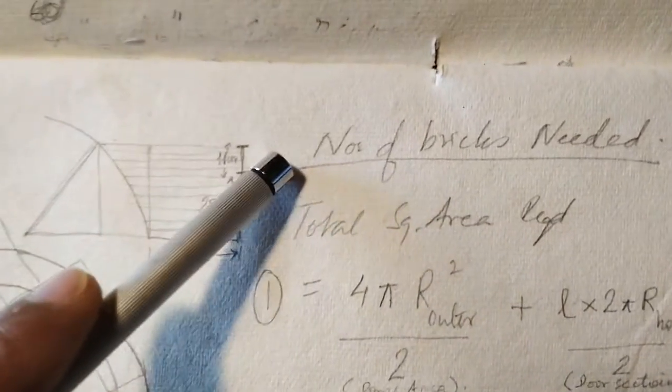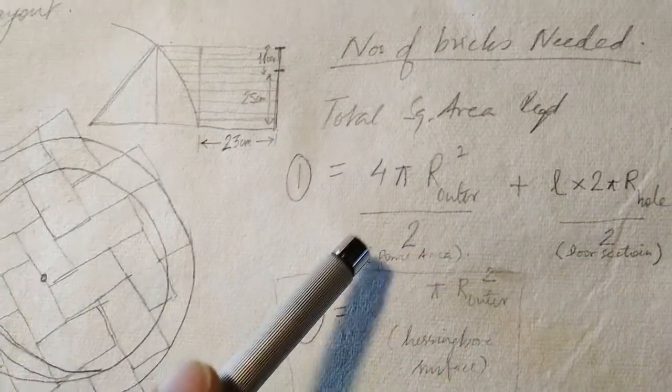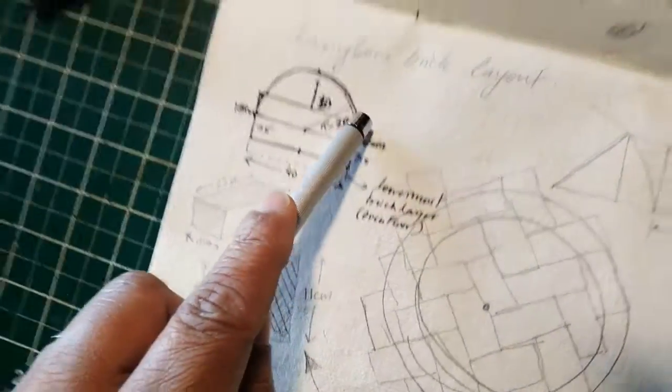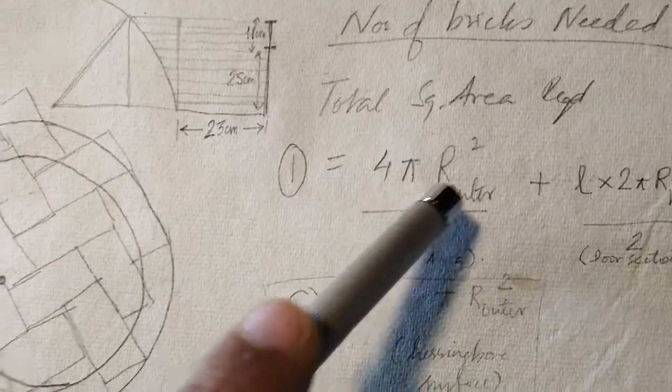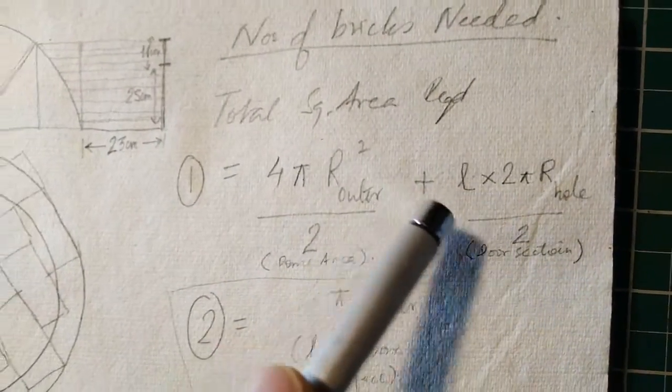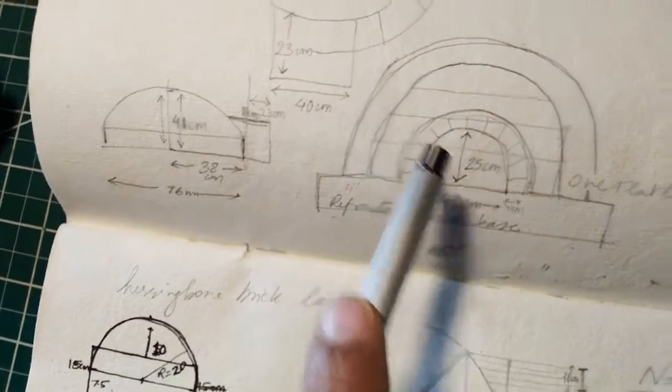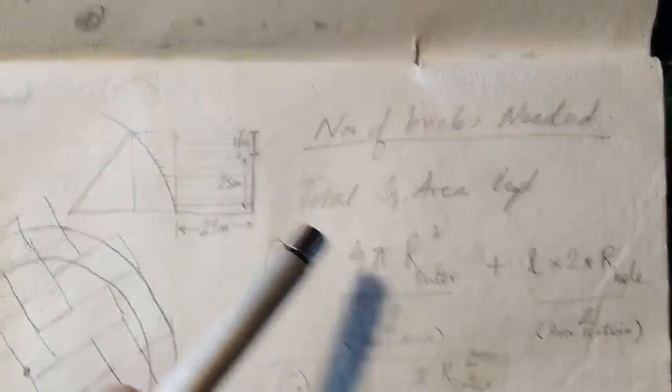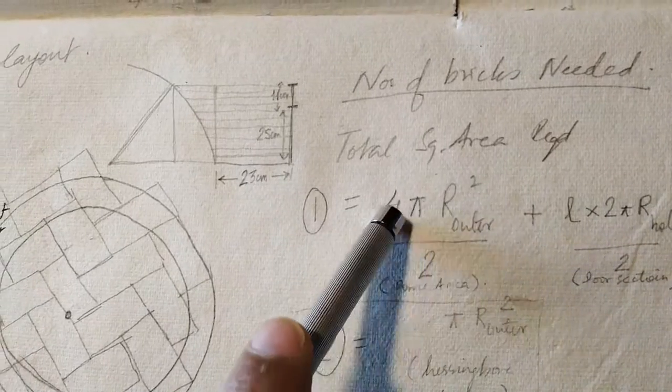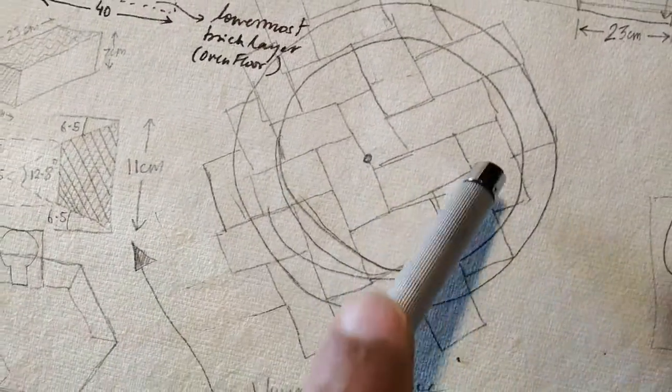Now I need to figure out how many bricks we need. Basically that works out to how much square area you need. The square area consists of two things. First, you're building half a sphere, so you need to calculate the surface area of a sphere and divide by two. Then you need to add the fact that you have two arches at the door, one here and one inner. So you've got the total square area of the dome plus the two arches at the entry, and then you figure out the number of bricks you need.